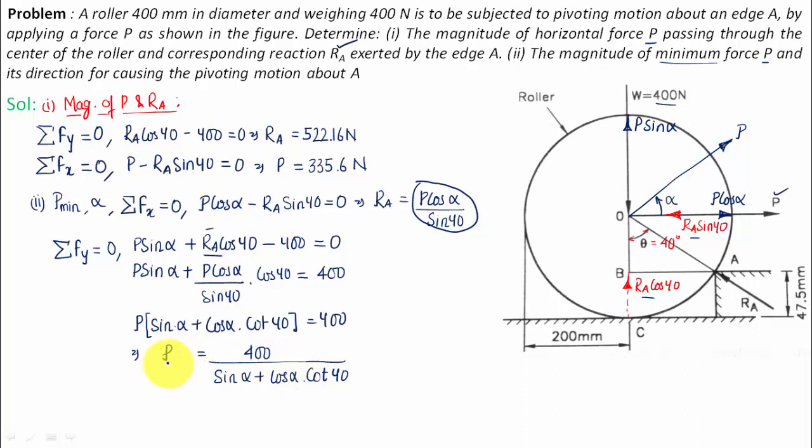Now what we are supposed to do is we have to find the minimum value of P. Now if P has to be minimum, then this denominator has to be maximum. If this has to be maximum, what we need to do is we need to differentiate this term, and then only the maximum value of alpha will turn out. So we're going to be differentiating this with respect to alpha.